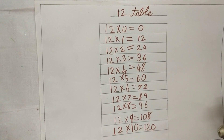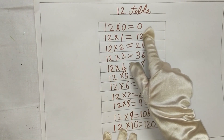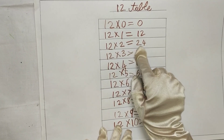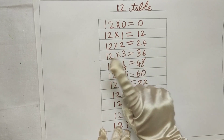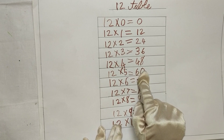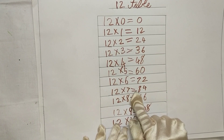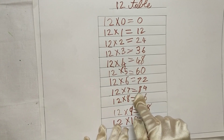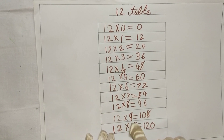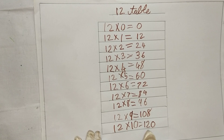Let's repeat one last time. 12 into 0 is 0. 12 into 1 is 12. 12 into 2 is 24. 12 into 3 is 36. 12 into 4 is 48. 12 into 5 is 60. 12 into 6 is 72. 12 into 7 is 84. 12 into 8 is 96. 12 into 9 is 108. 12 into 10 is 120.